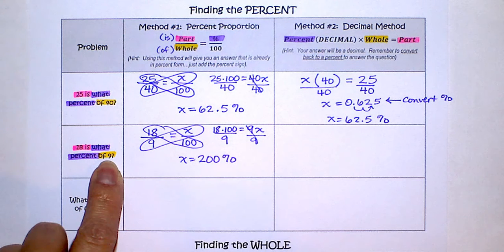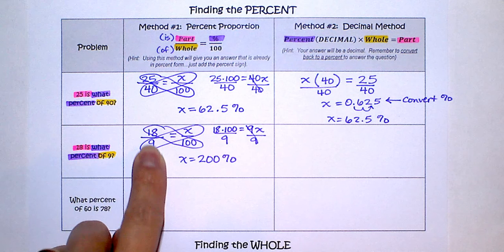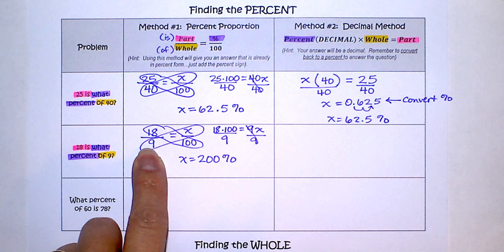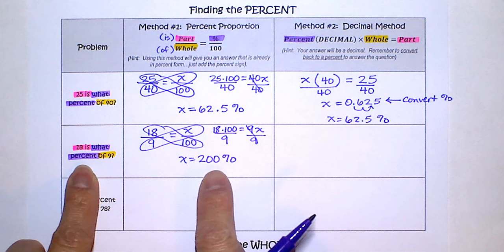Well, if we only have 9 and it's now 18, yes, that's going to double, so 200 percent. 9 times 2 is 18, and 100 times 2 is 200. So 18 is 200 percent of 9.